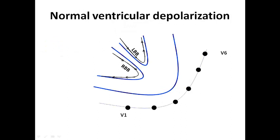To understand this, we need to see the illustration diagram for normal ventricular depolarization. We can see the left ventricular free wall, interventricular septum, and right ventricular free wall, with the left bundle branch in the left ventricle and right bundle branch in the right ventricle, and the chest leads from V1 to V6. The first process is septal depolarization, which normally goes from left to right, producing a small positive deflection in V1 and a small negative deflection in V6.